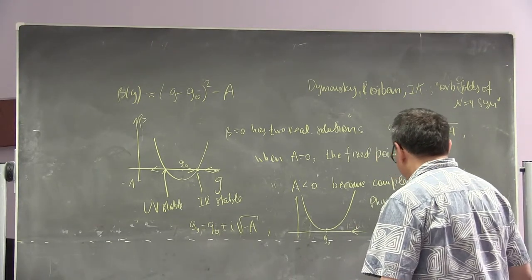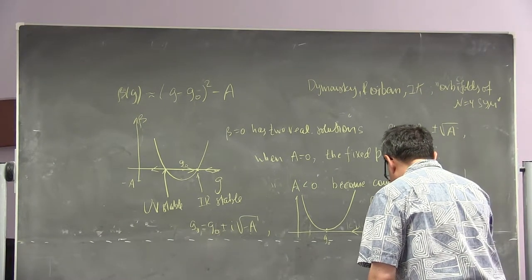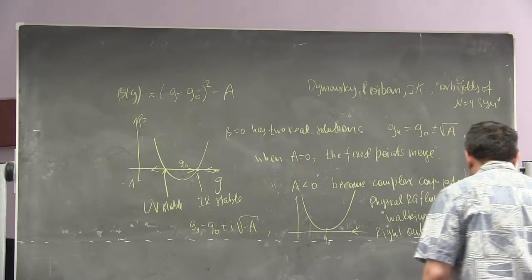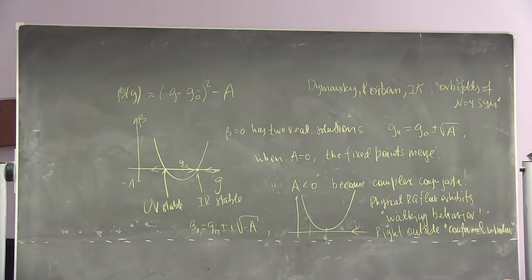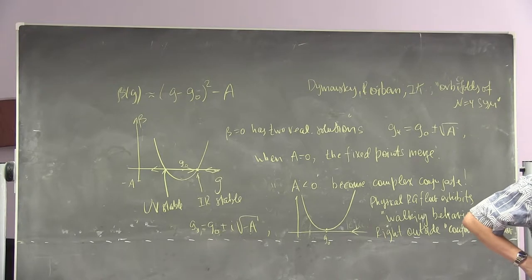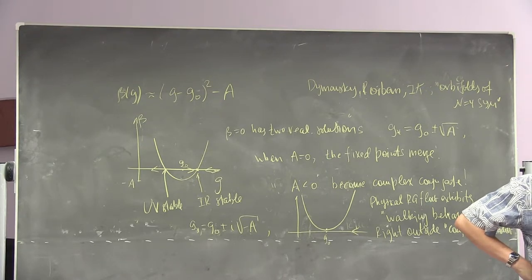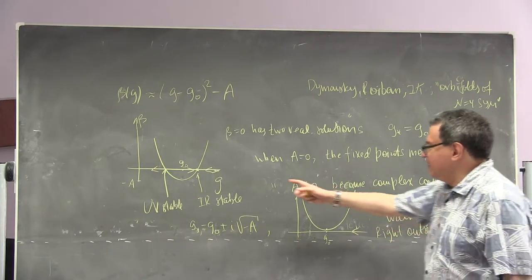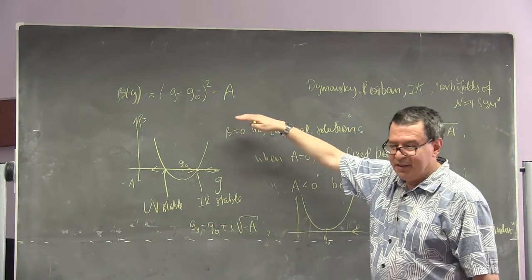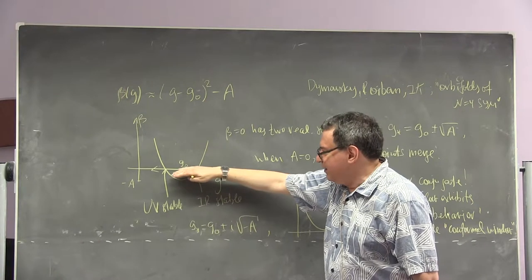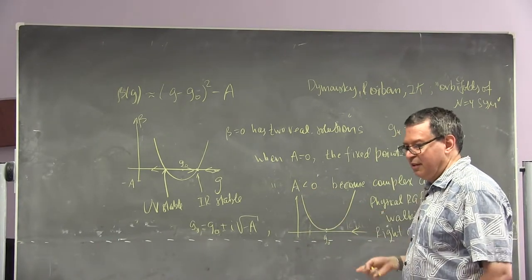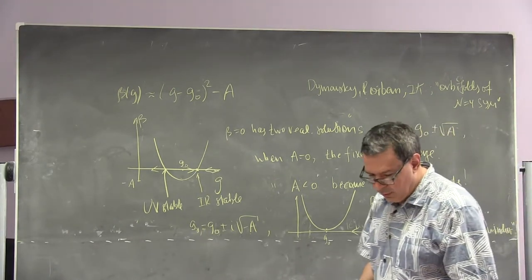It happens right outside the conformal window. Have some of you heard the term 'conformal window'? How about 'line of fixed points'? It's basically the same thing — conformality for a certain range of parameters. The conformality persists as long as a is positive, but the moment a hits zero, that's where your line of fixed points ends. The moment it's less than zero, it's no longer strictly conformal.